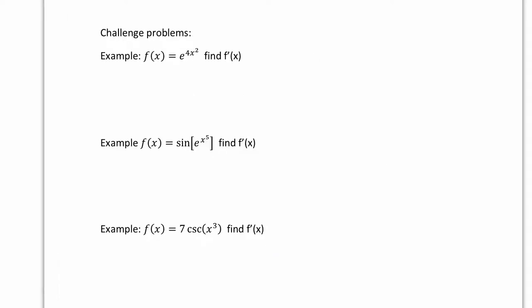Here are some real challenge problems. Again, please try the questions before I write down the solution. We have f of x equals e to the power of 4x squared. Well, f prime of x will be the derivative of e, which is just e, and 4x squared gets rewritten, times the derivative of 4x squared, which is simply 8x.